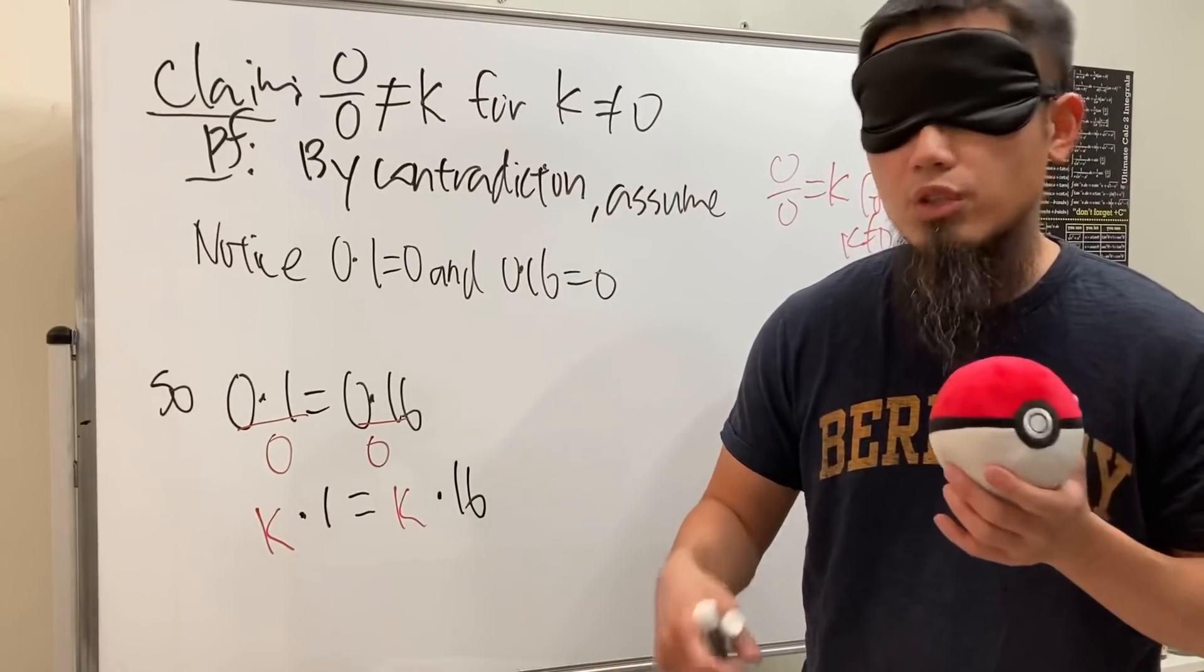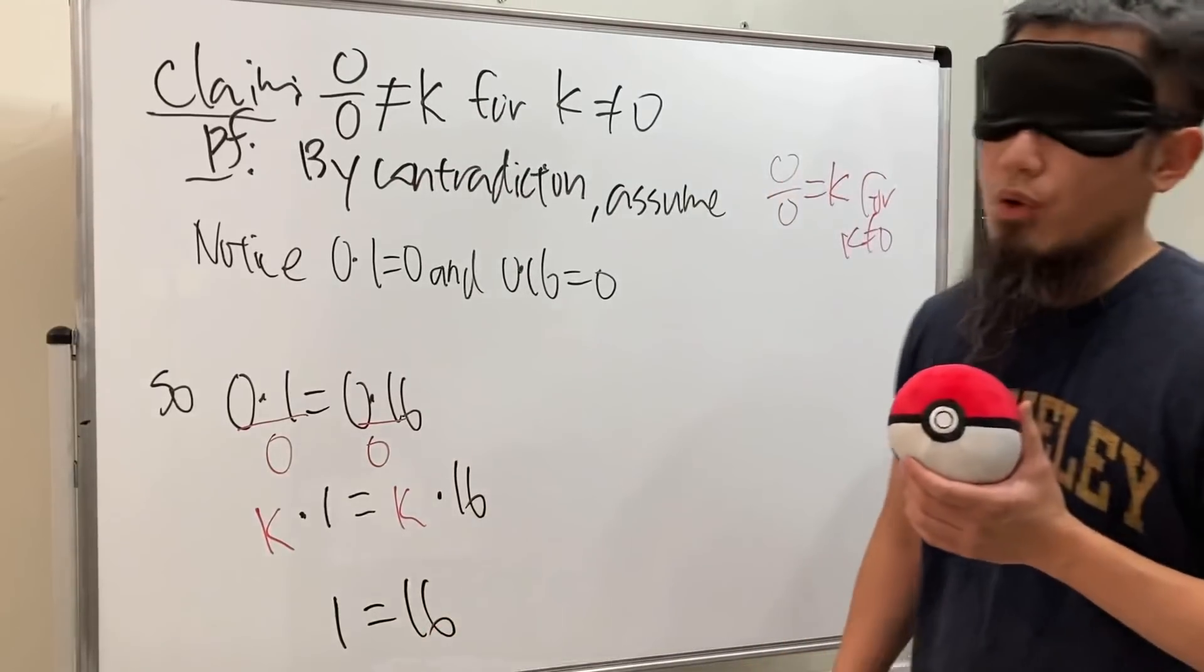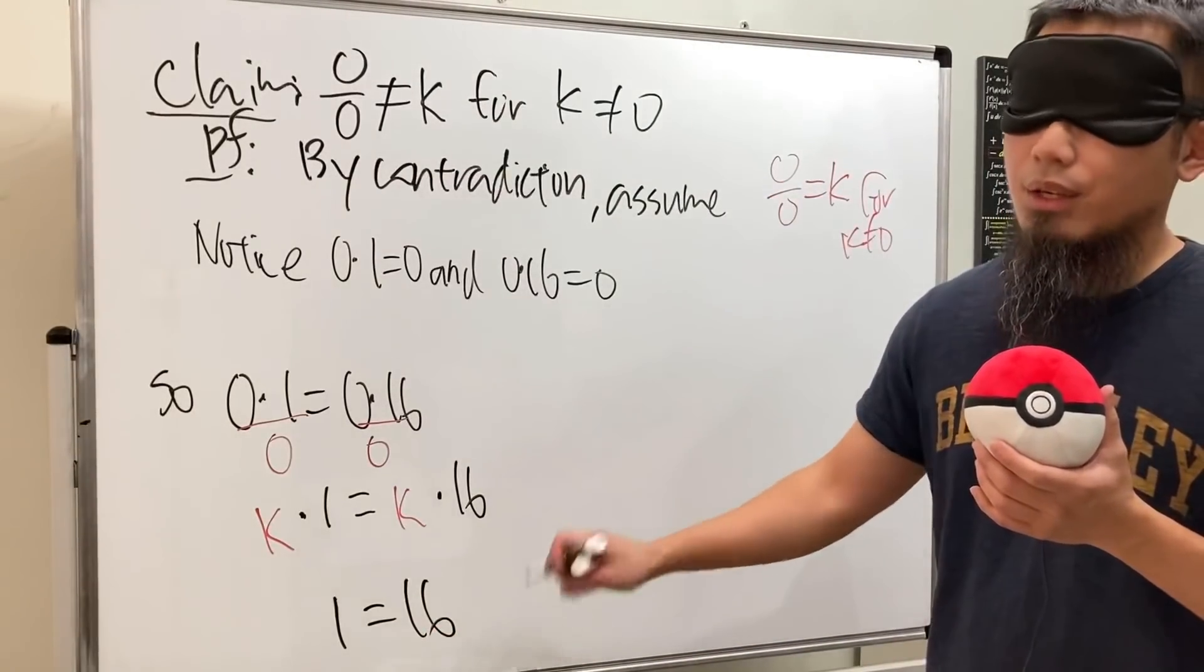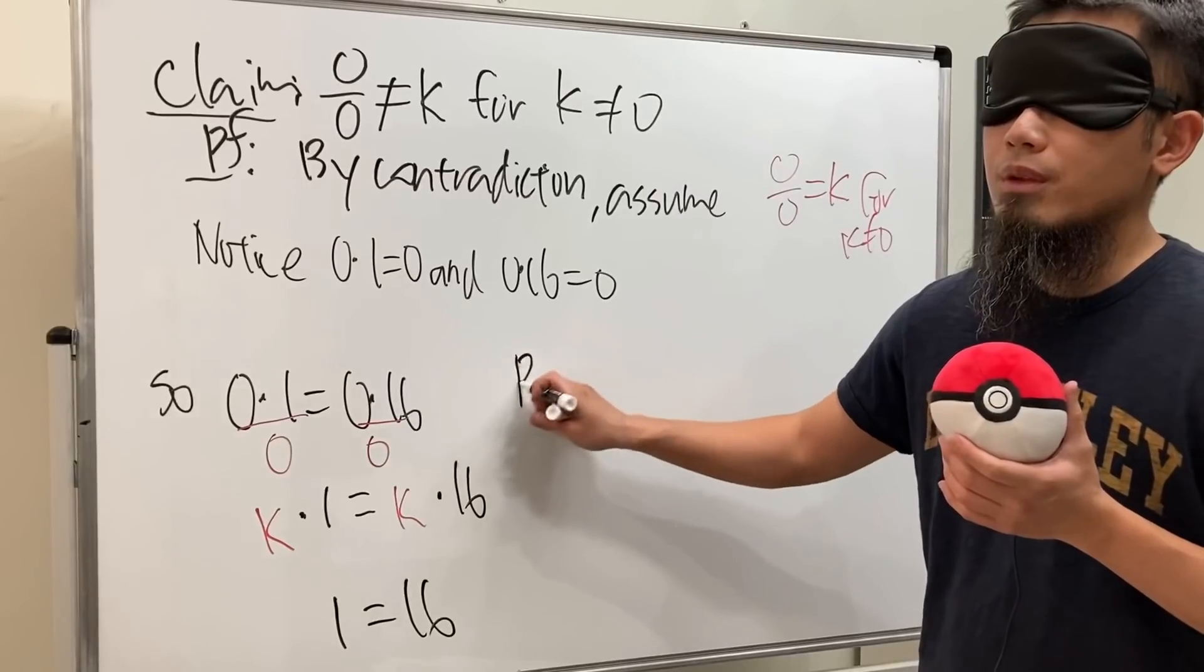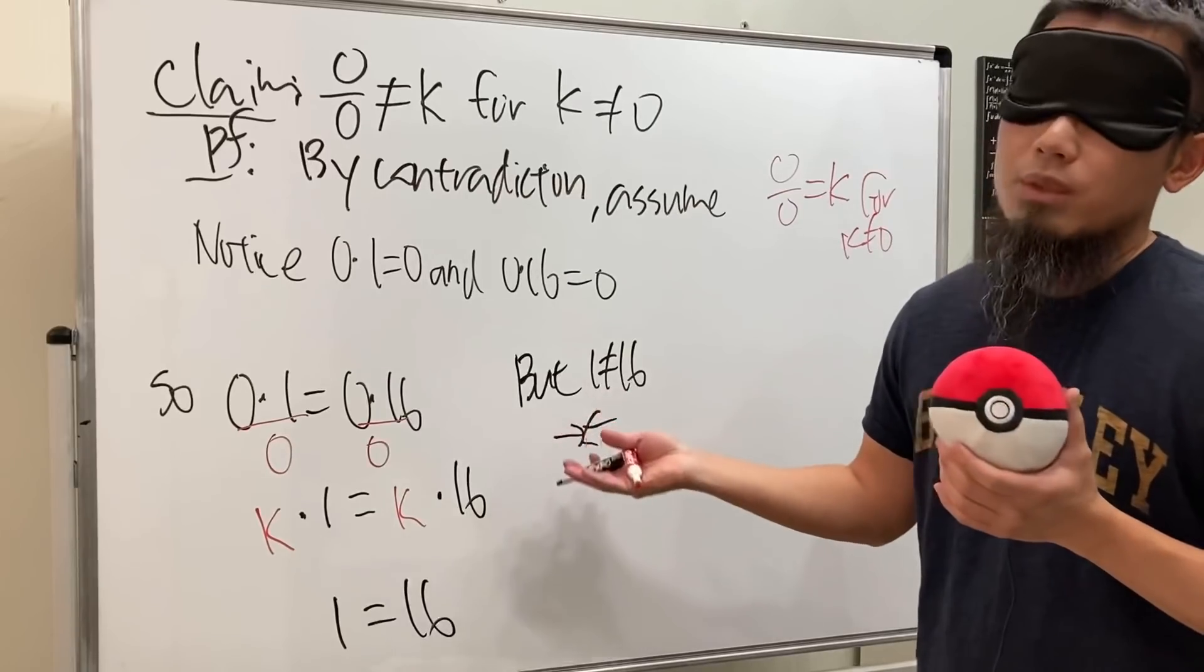And now because k is not equal to zero, so of course we can divide both sides by k. So we get one is equal to 16. Oh my goodness, look at that. Of course we know one is not equal to 16. I wish it is, but anyway though, this is how we end out with the contradiction.